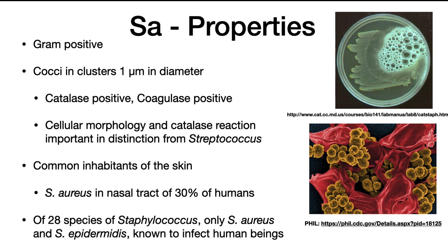Enrichment of Staphylococci is relatively easy on salt-containing medium because the genus is salt-tolerant. Of 28 known species of Staphylococcus, only S. aureus and S. epidermidis are known to infect humans. Interestingly, 30% of humans have S. aureus in their nasal tract, and some people harbor MRSA.